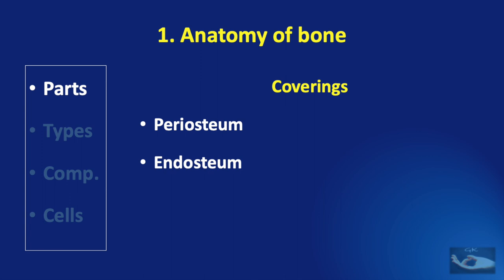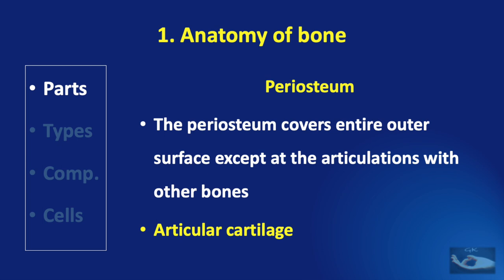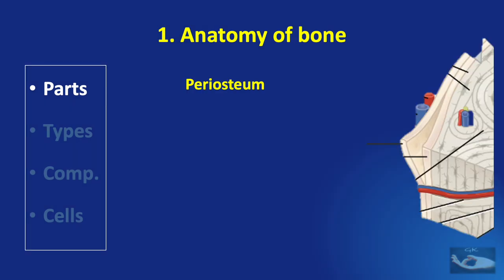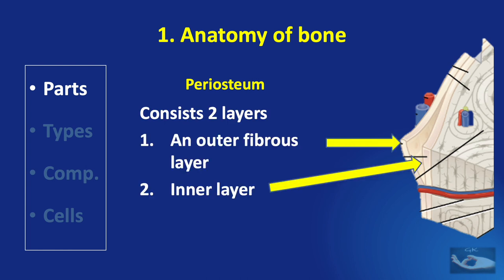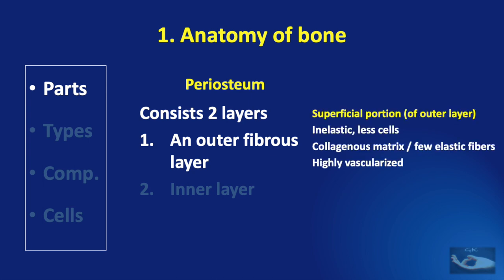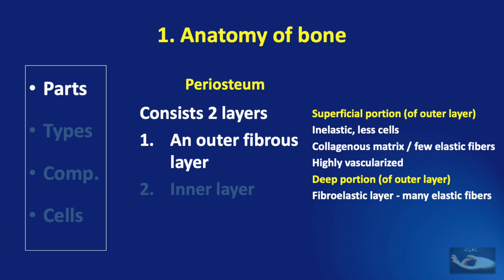The bone has two important coverings: the periosteum and the endosteum. The periosteum covers the entire outer surface of the bone, except at the articulations with other bones, where the articular cartilage covers the bone. The periosteum consists of two layers: an outer fibrous layer and an inner cellular layer. The outer fibrous layer consists of a superficial portion which is inelastic, contains fewer cells and mainly has a collagenous matrix and very few elastic fibers. It is highly vascularized.